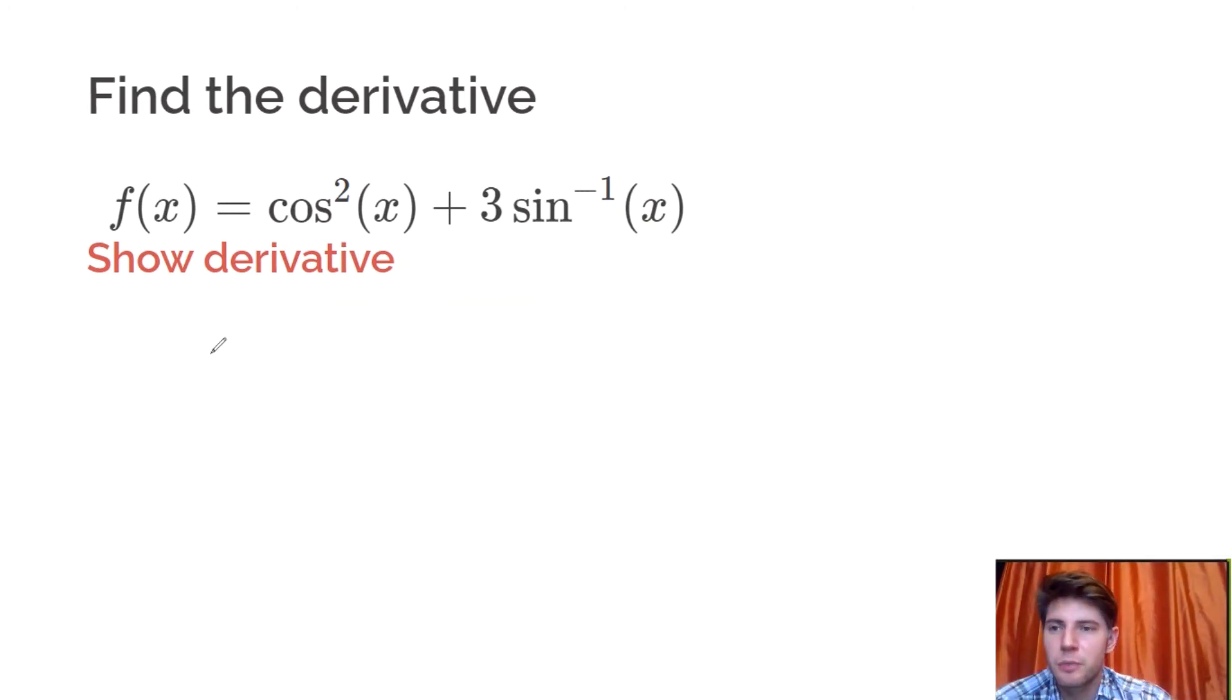So first, when I see these, I like to rewrite this first one as cosine x squared. I think it's just easier to do chain rule if you see it that way. And then I'm going to leave this one alone, though, for a reason you'll see in a second.